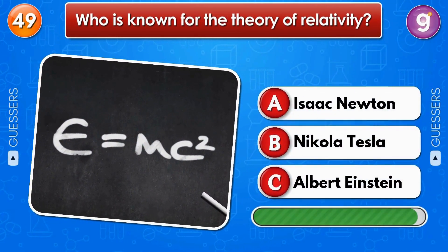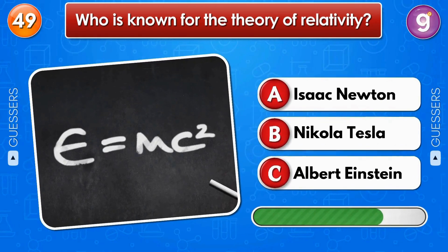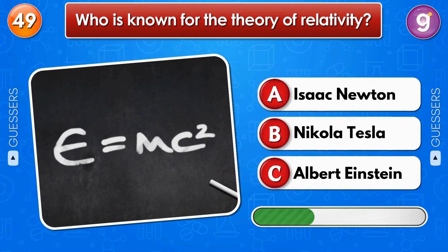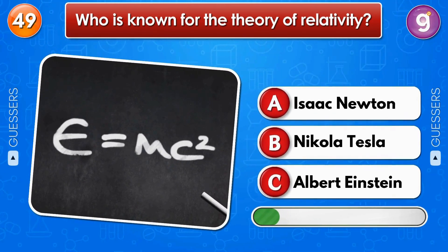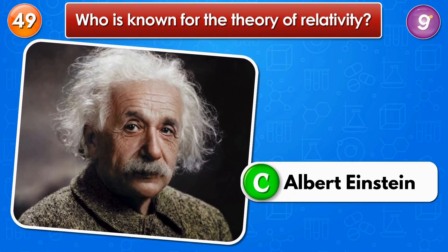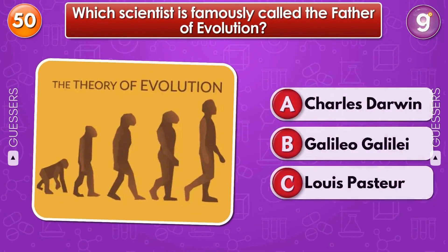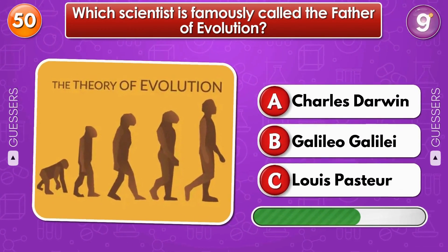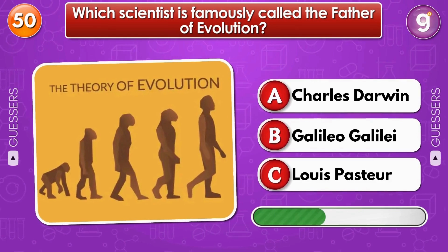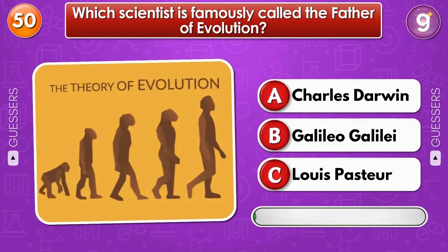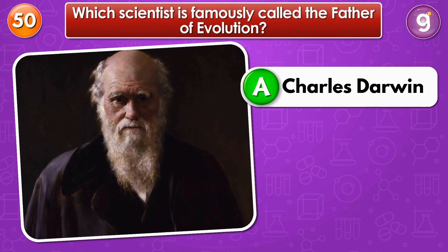Who is known for the theory of relativity? Albert Einstein. Which scientist is famously called the father of evolution? Charles Darwin.